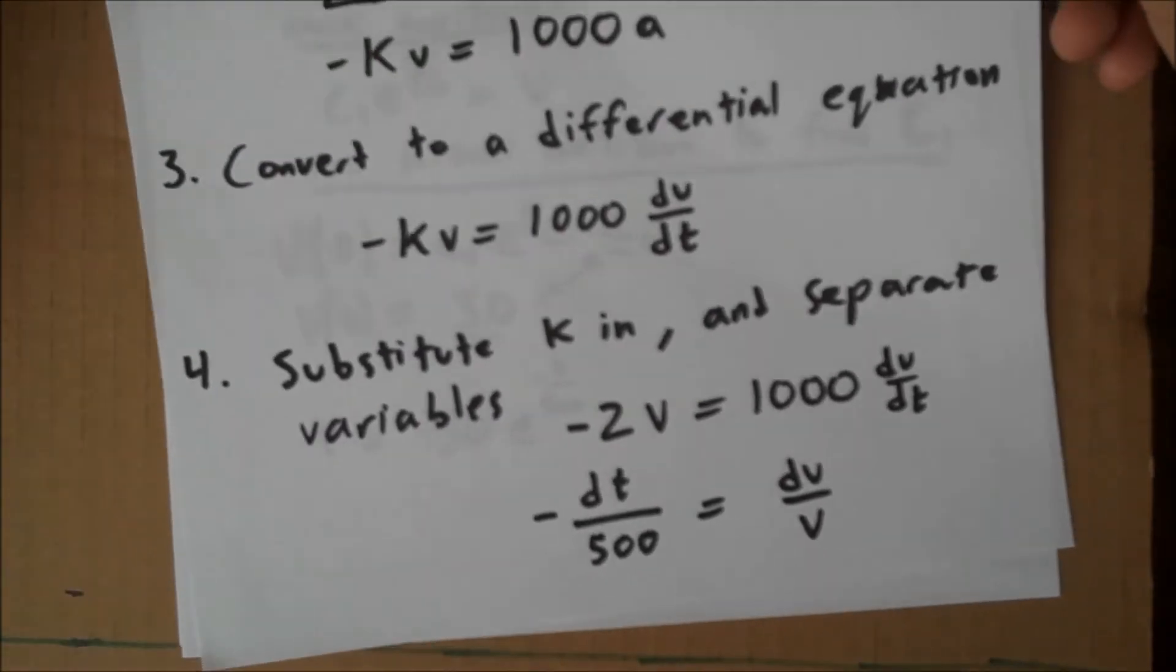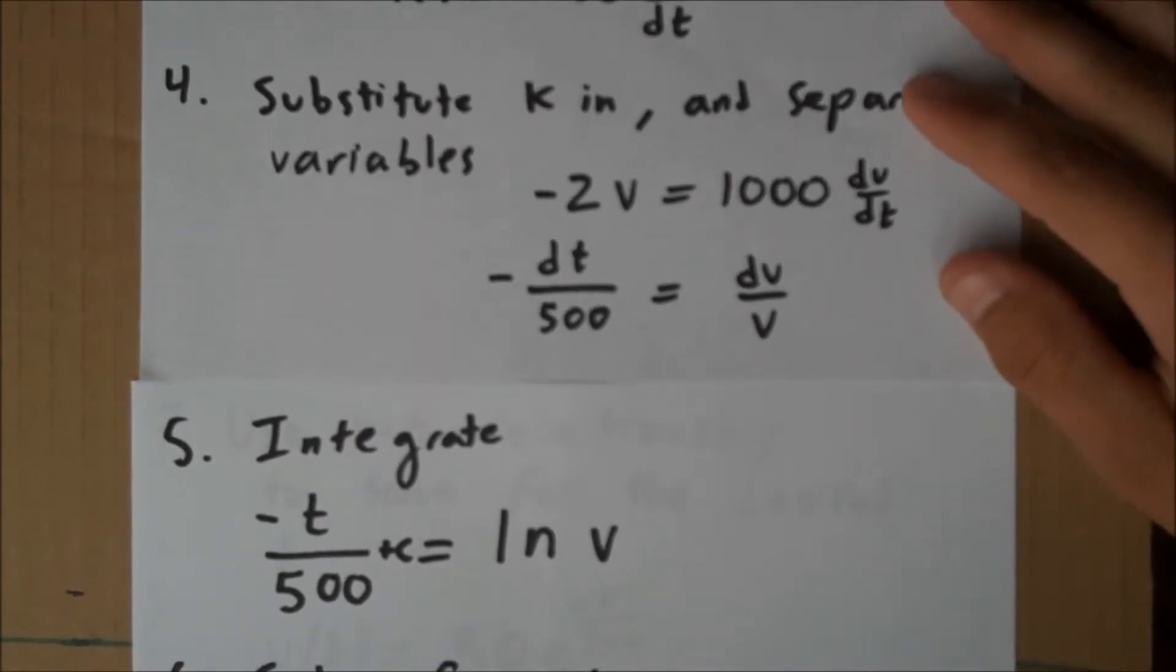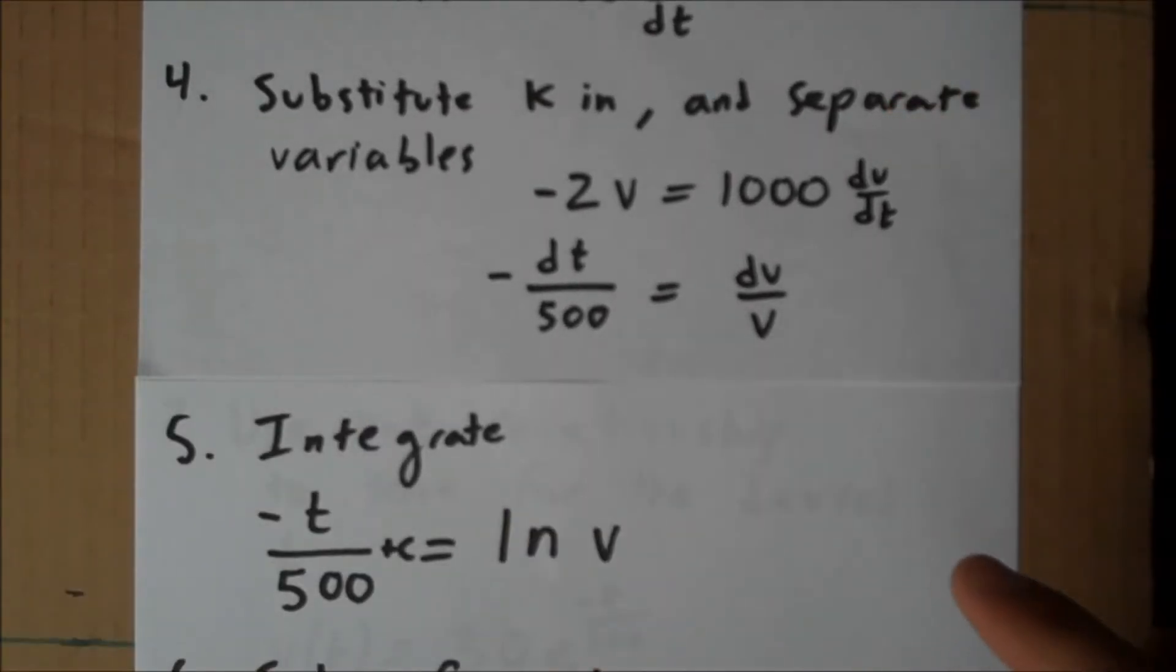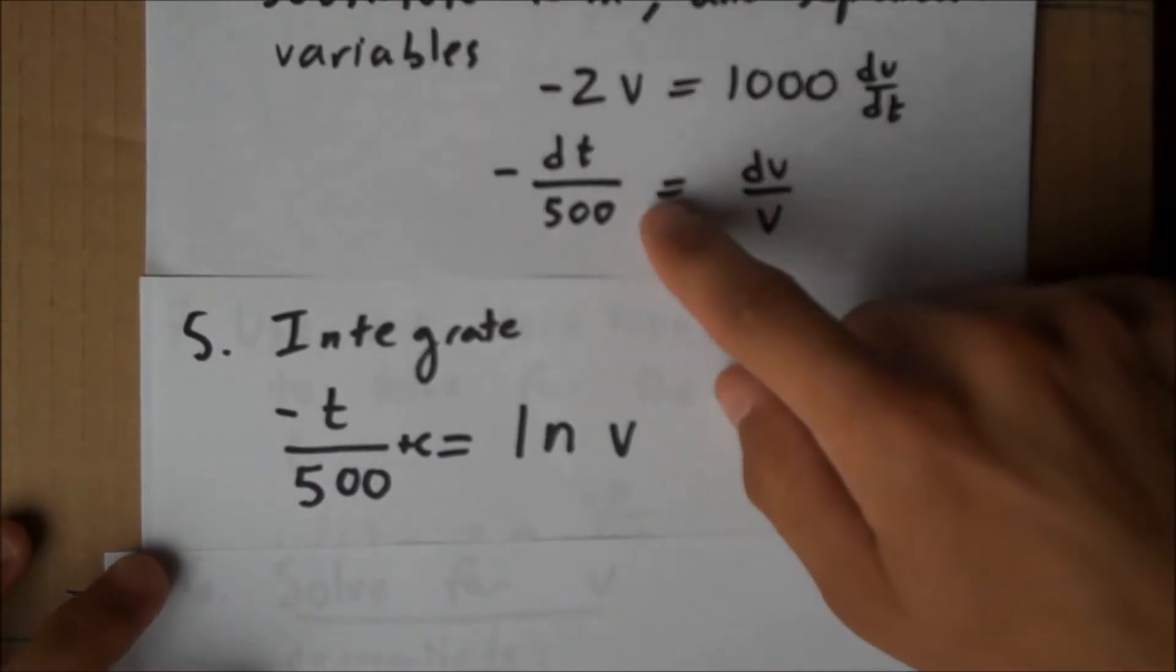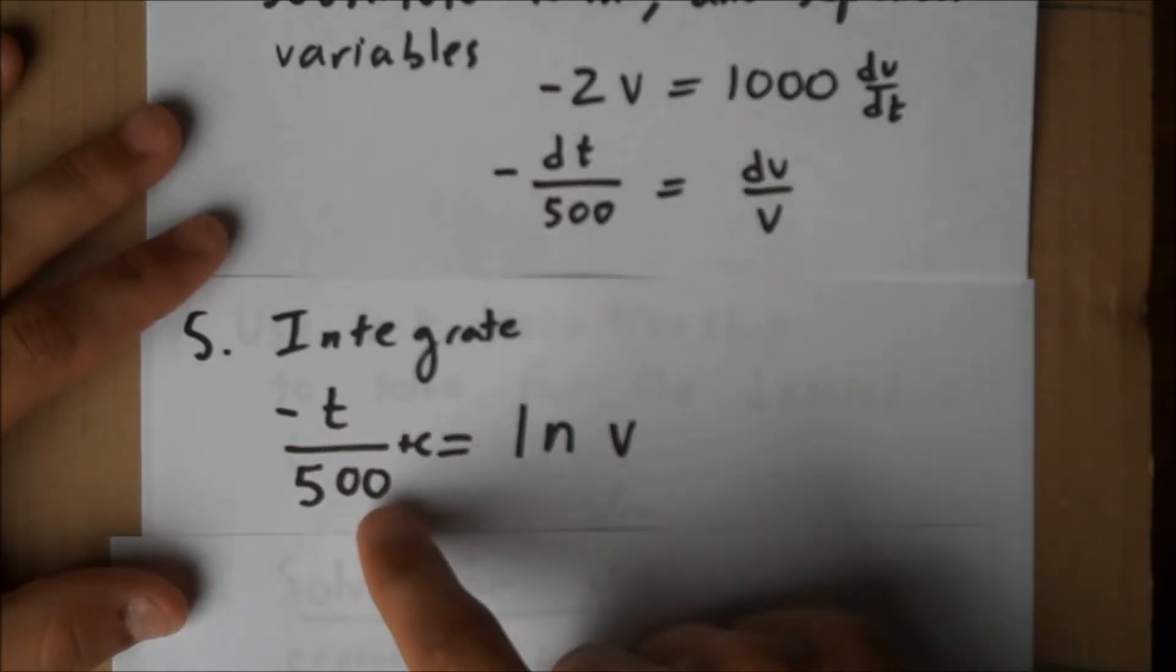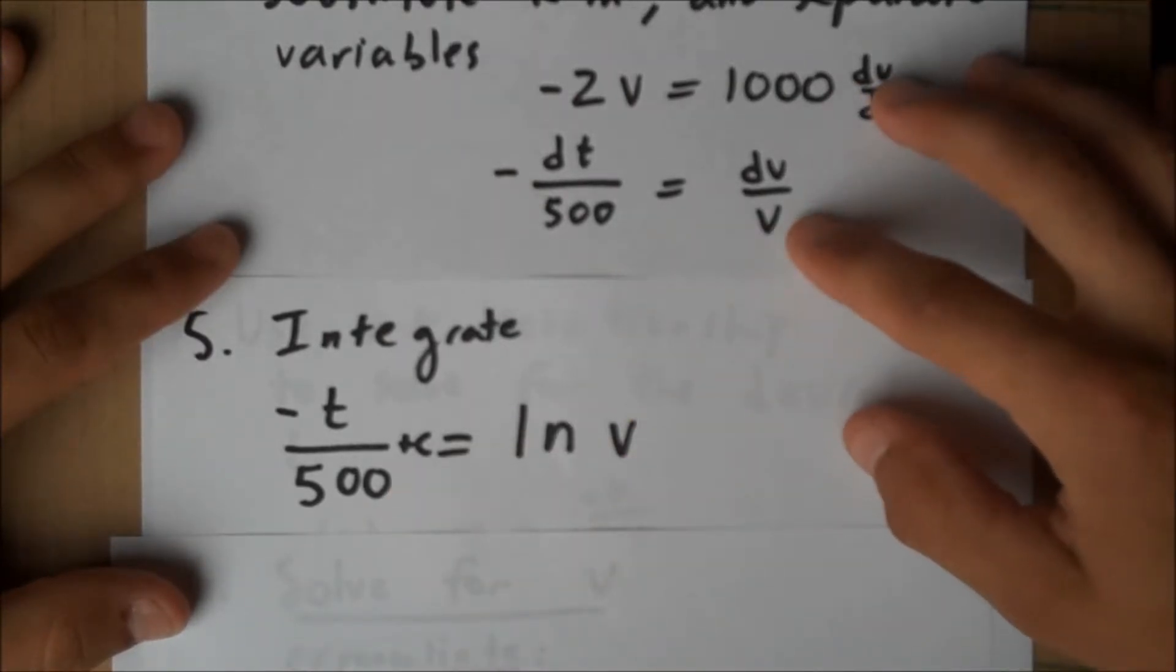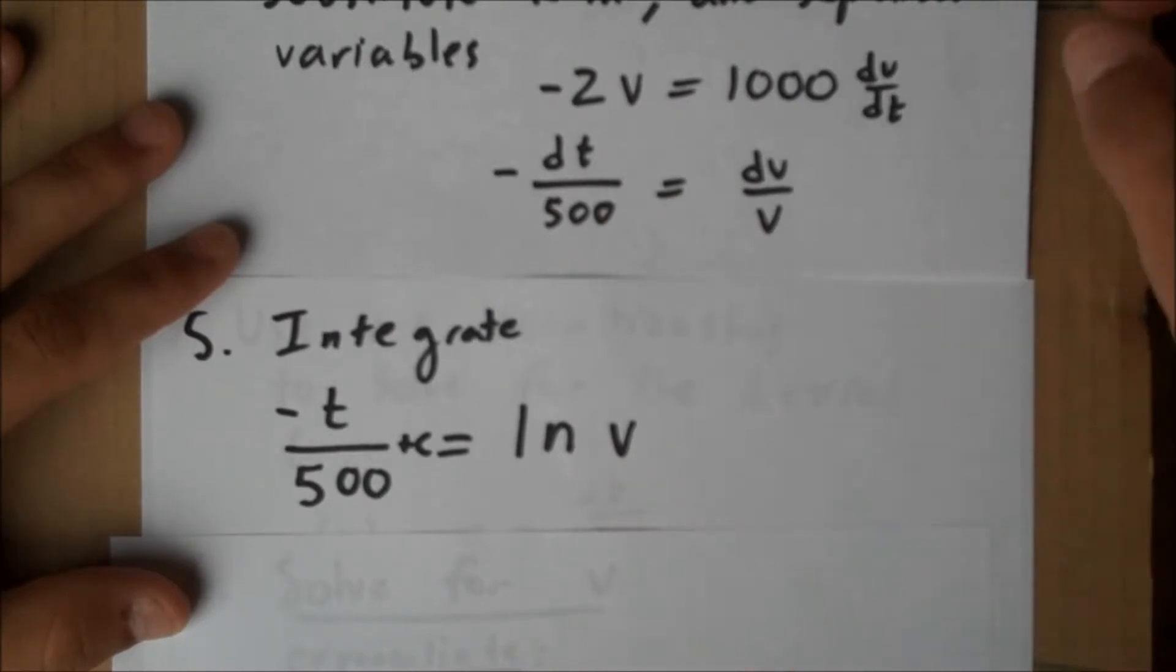Now that we've separated our variables, the next step in solving a separable differential equation is to integrate. Integrating the left side, negative dt over 500, gives us negative t over 500 plus a constant, because it's an indefinite integration. Integrating the right side, dv over v, gives us the antiderivative of 1 over v, natural log of v.